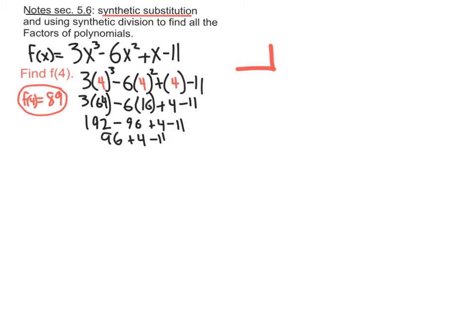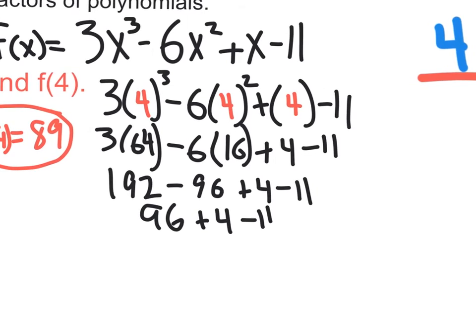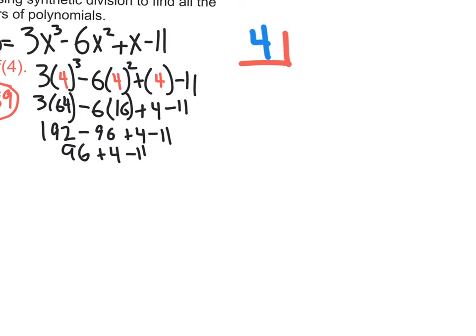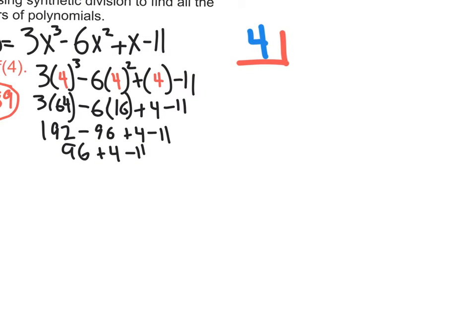Before, we had a binomial, and you had to think opposite of what you saw with the x, and plug in the opposite value with the coefficients. In this case, if it says f of 4, we are simply going to plug in a 4 right where the box is. And we might as well write down all the coefficients that we see right here. The coefficients are 3, negative 6, positive 1, and negative 11.